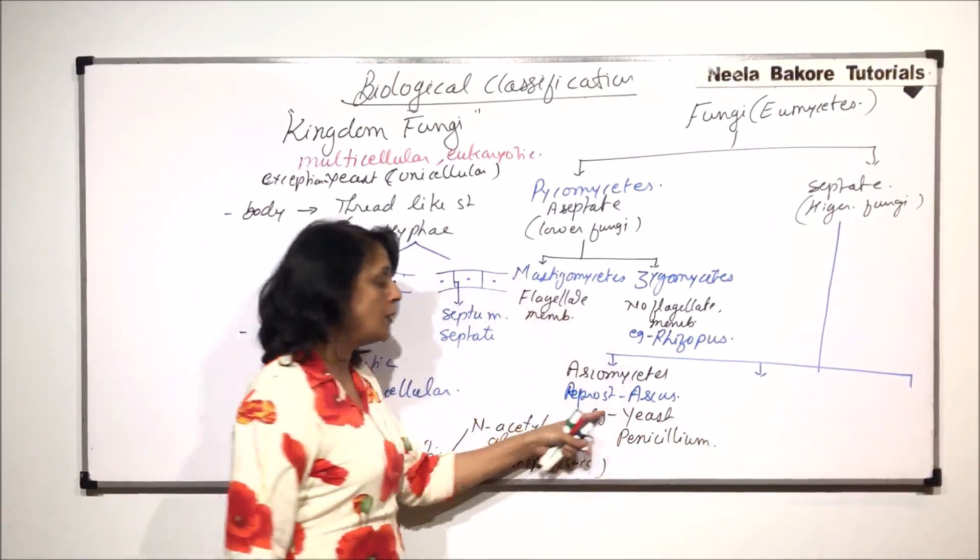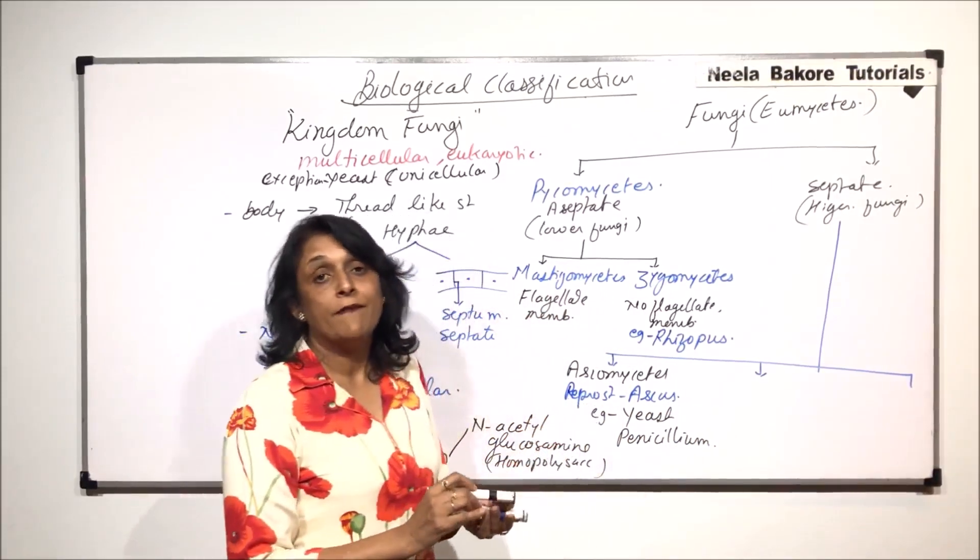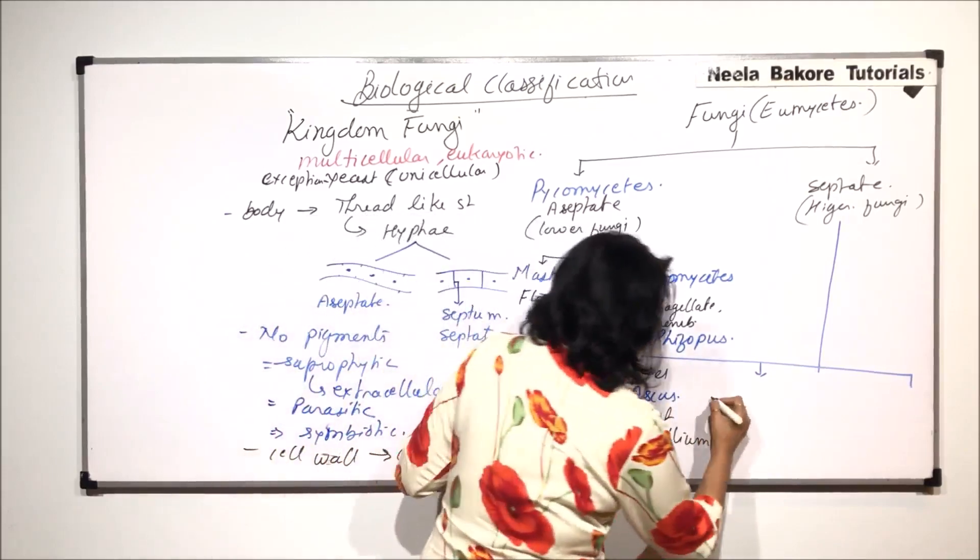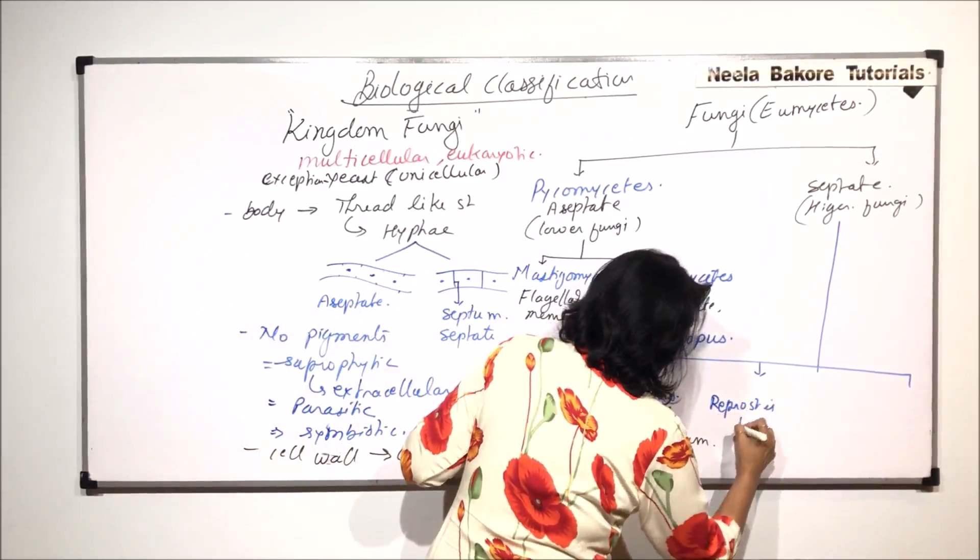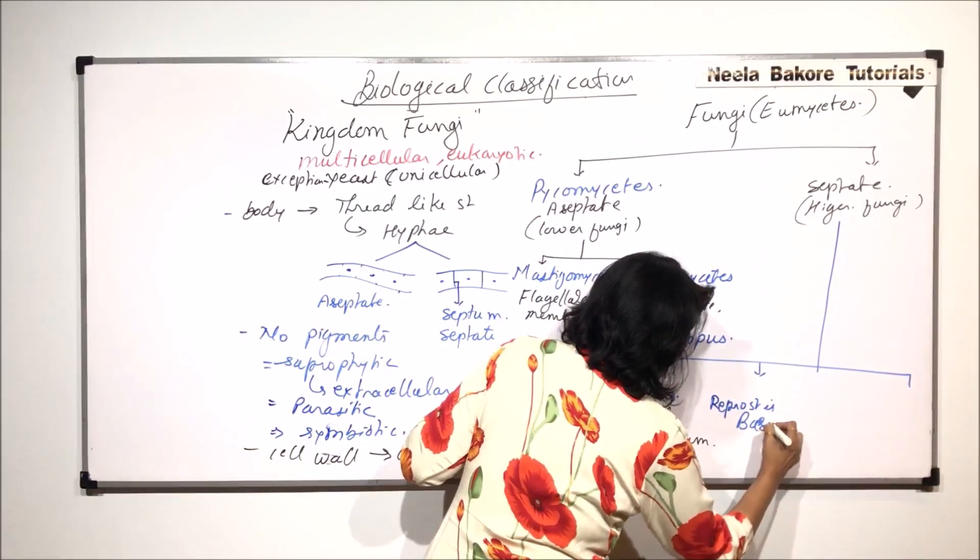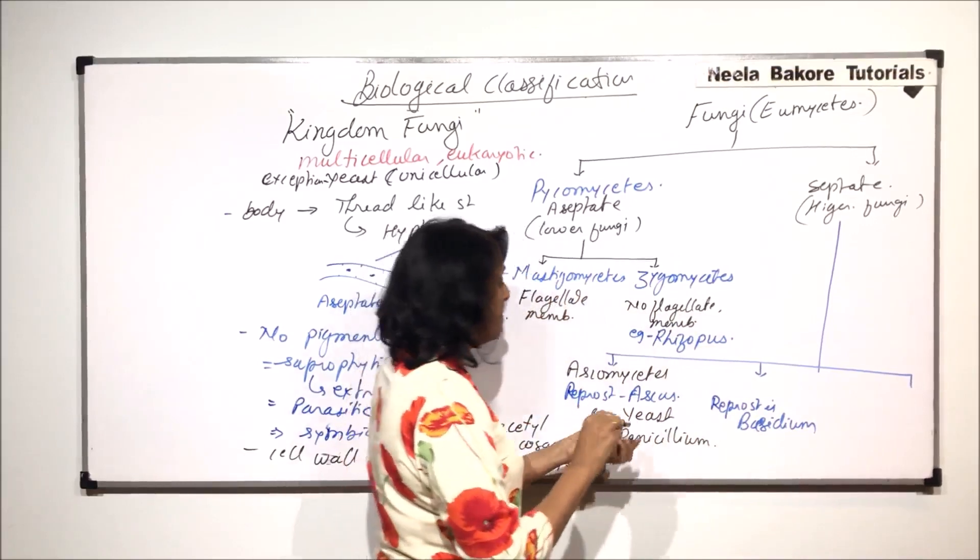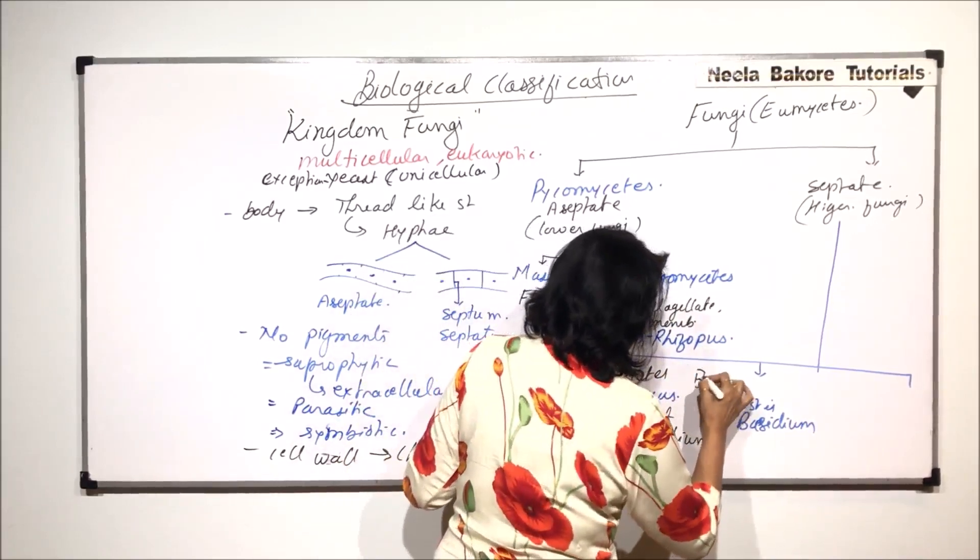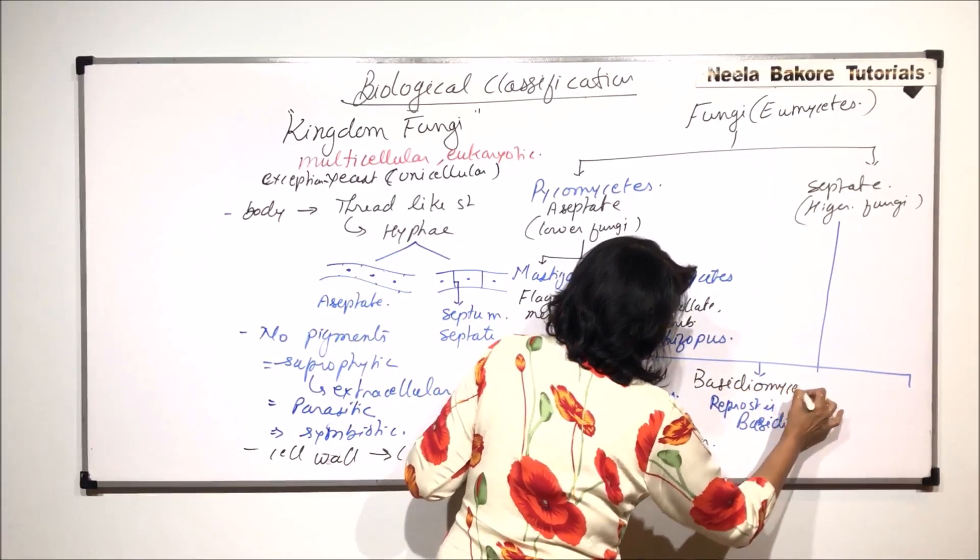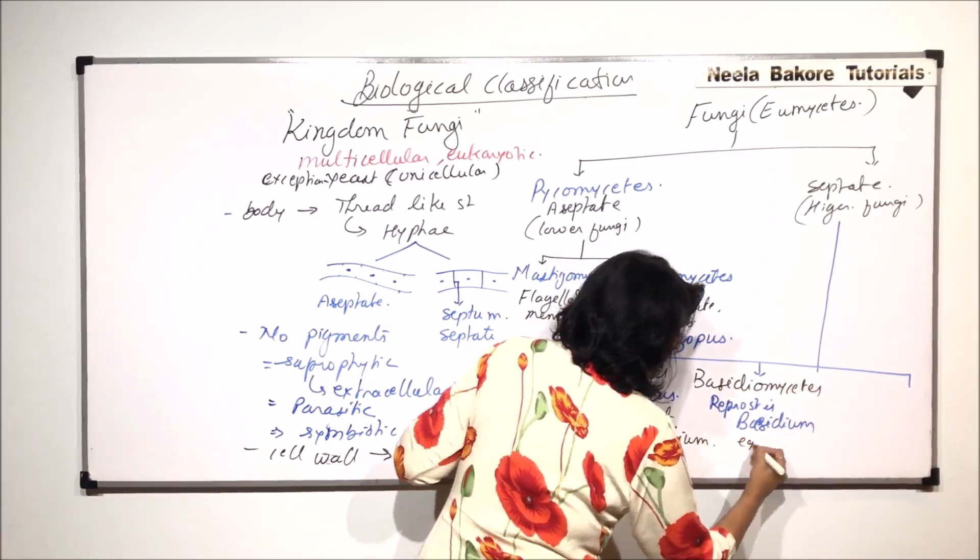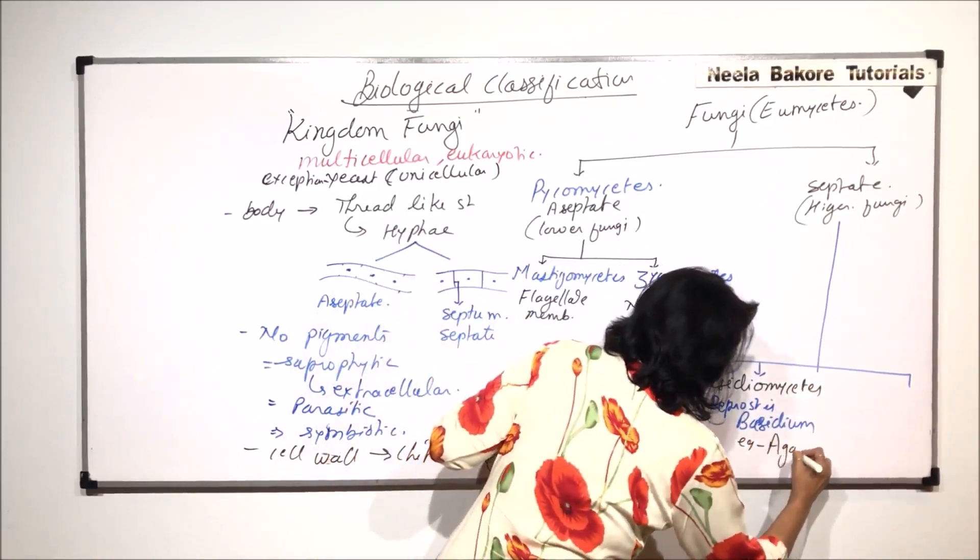The second group is where the reproductive structure is basidium. Then the group is known as basidiomycetes. And in this, we'll take the example of mushroom, that is agaricus.